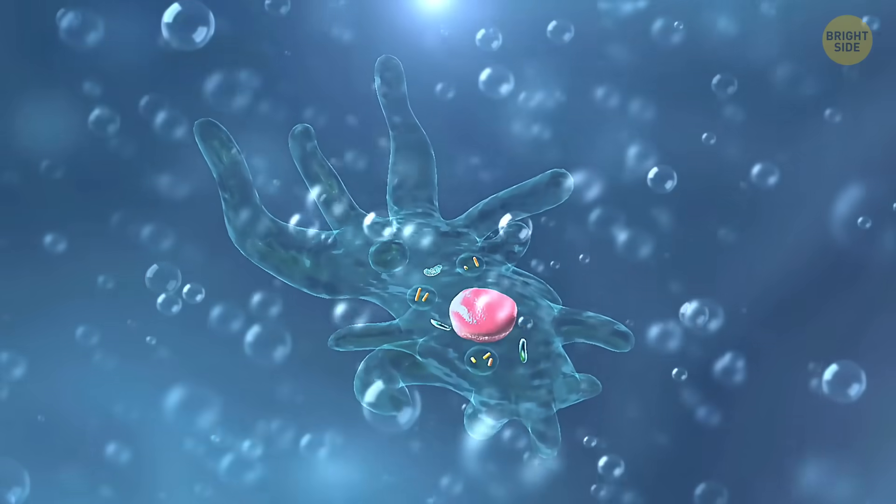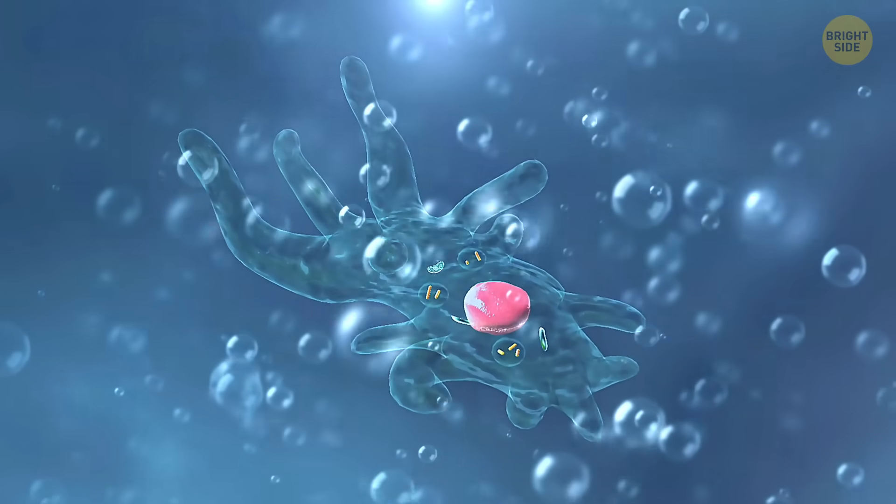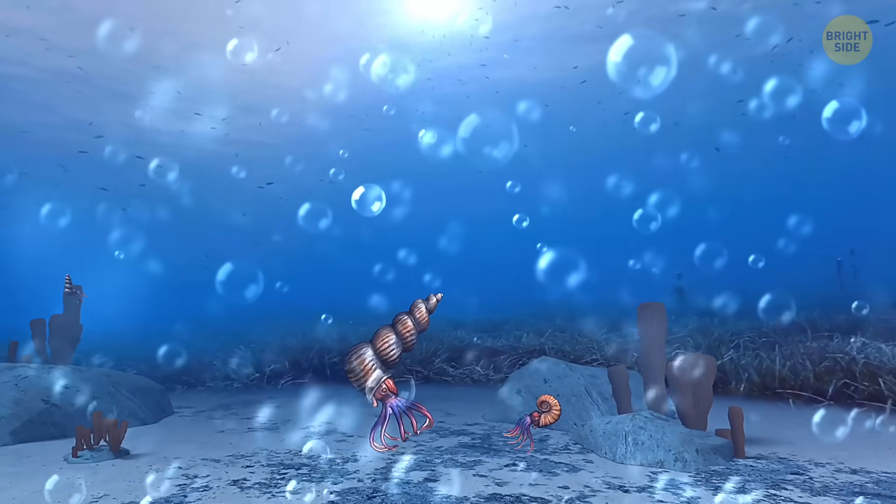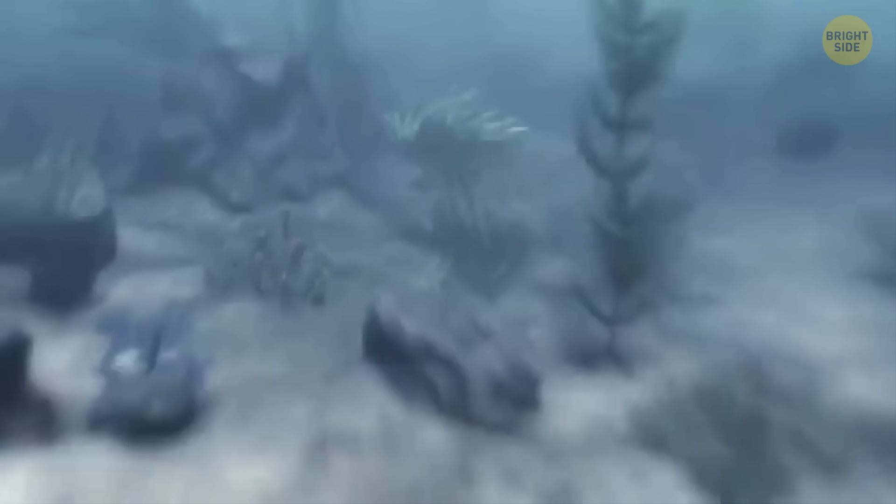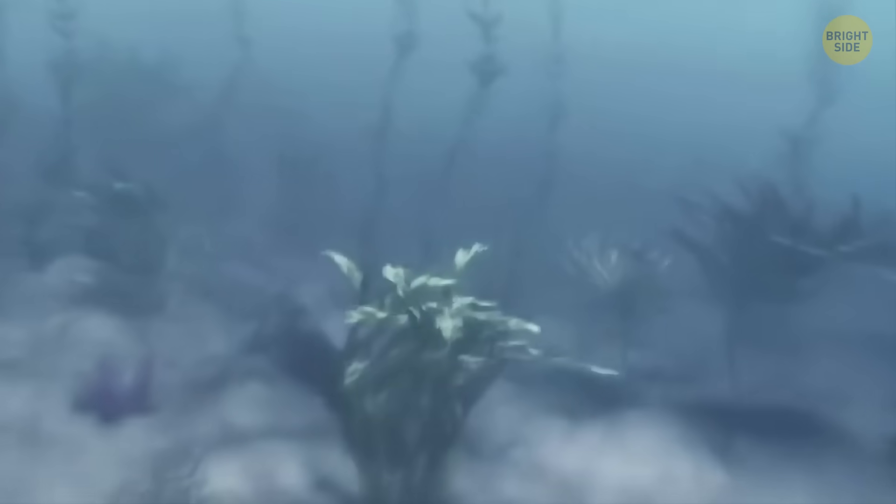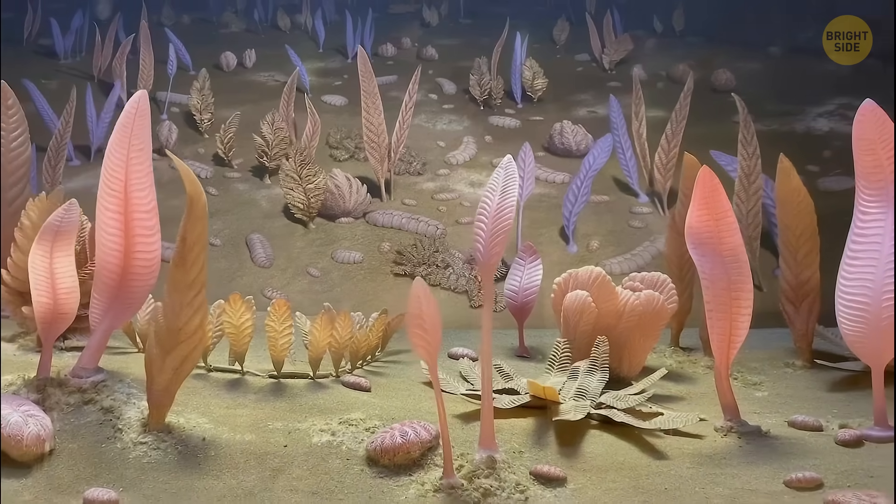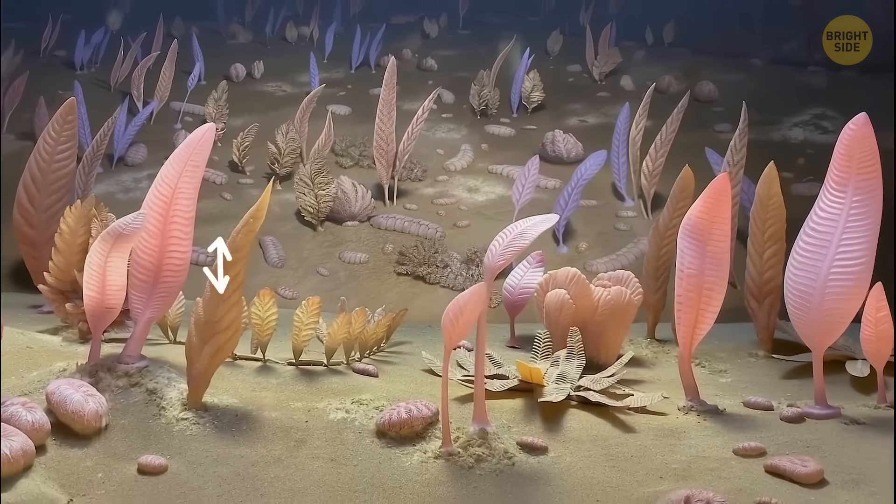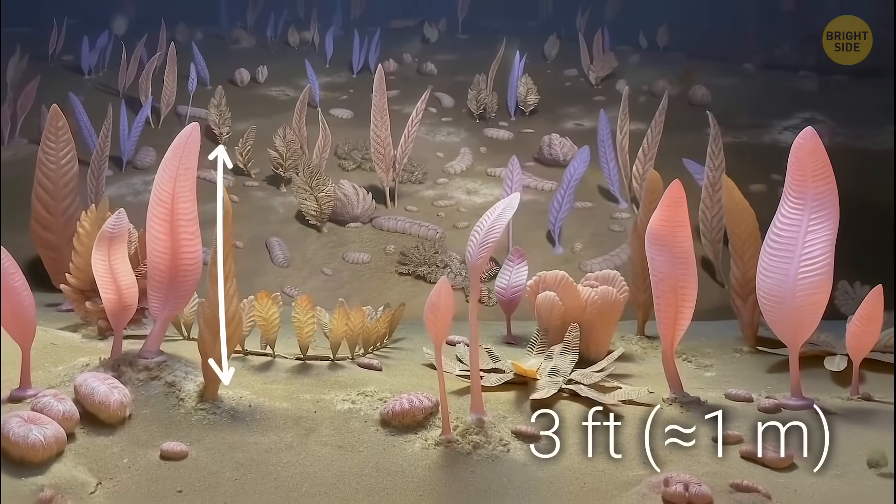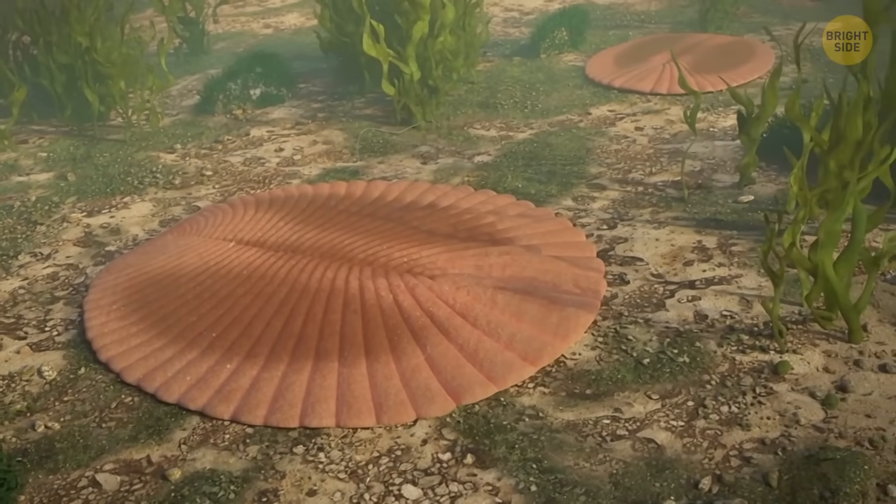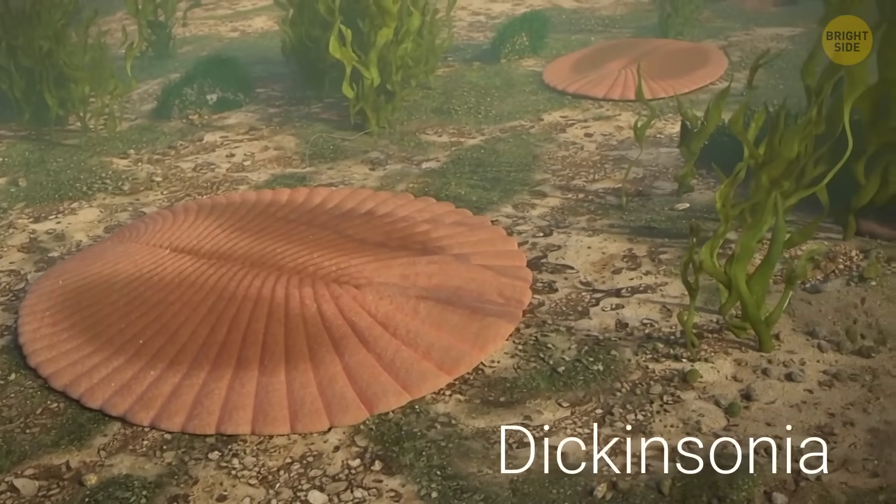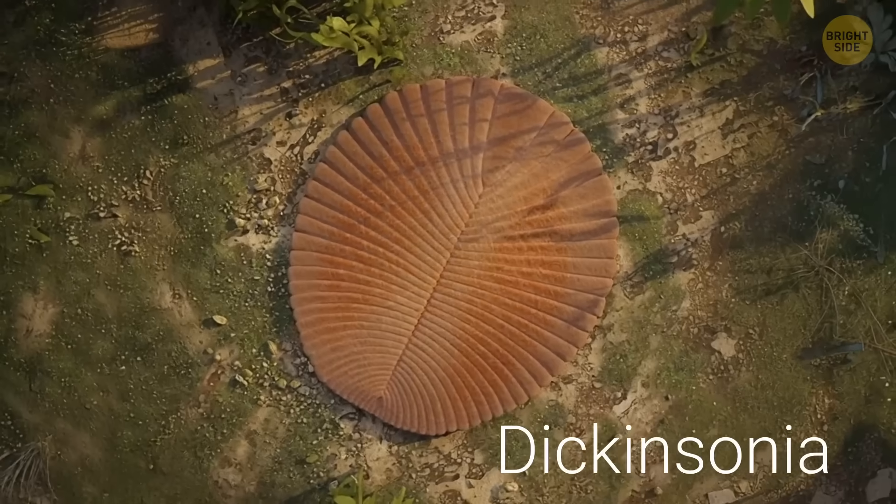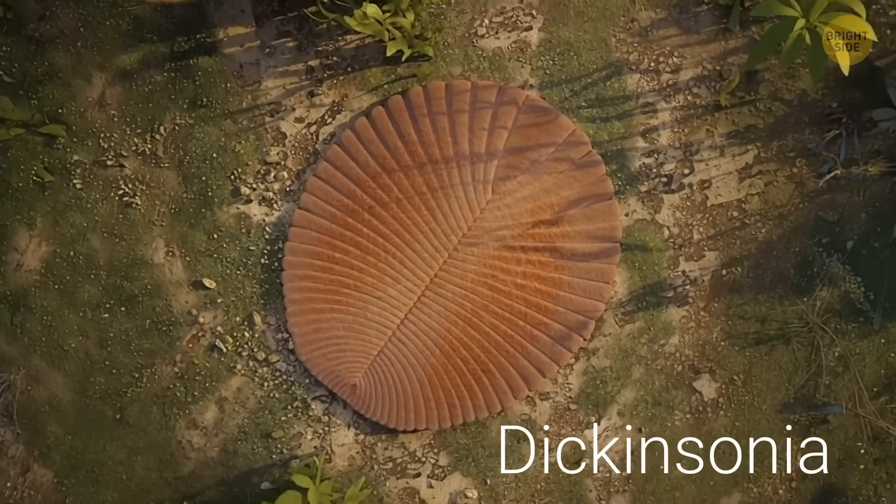That oxygen helped the first multicellular oxygen-breathing organisms to see the light of day. Those were strange, squishy creatures that hardly resembled animals today. Some were disc-shaped blobs, fronds, or shapeless fans stretching over three feet long. By the way, one of the earliest known animals, Dickinsonia, was among them. It looks kind of pretty, doesn't it?